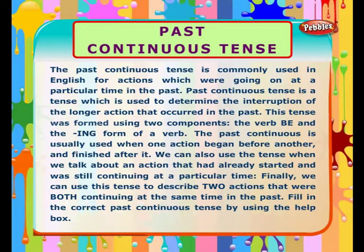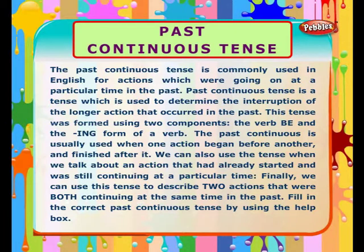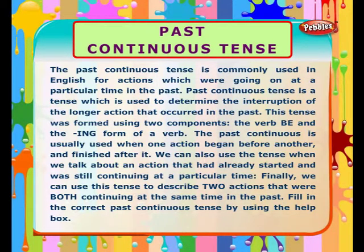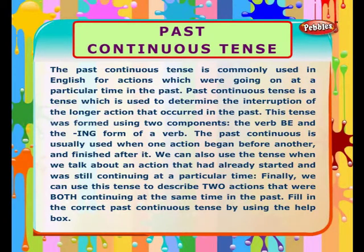The past continuous is usually used when one action began before another and finished after it. We can also use this tense when we talk about an action that had already started and was still continuing at a particular time. Finally, we can use this tense to describe two actions that were both continuing at the same time in the past.